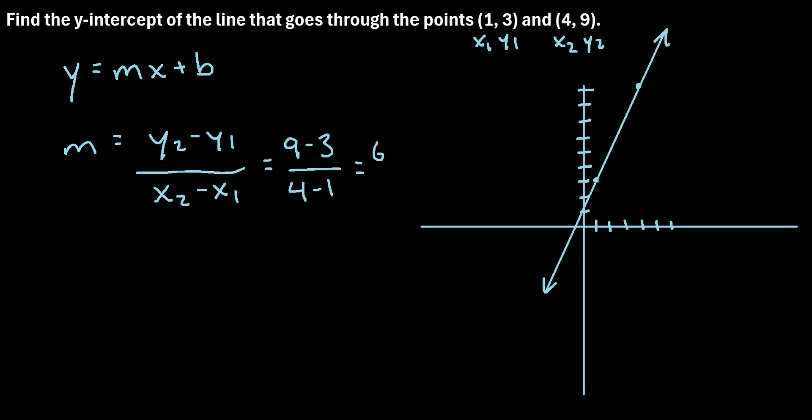So we get nine minus three is six, over four minus one is three, six divided by three is two. So we have y equals 2x plus b.